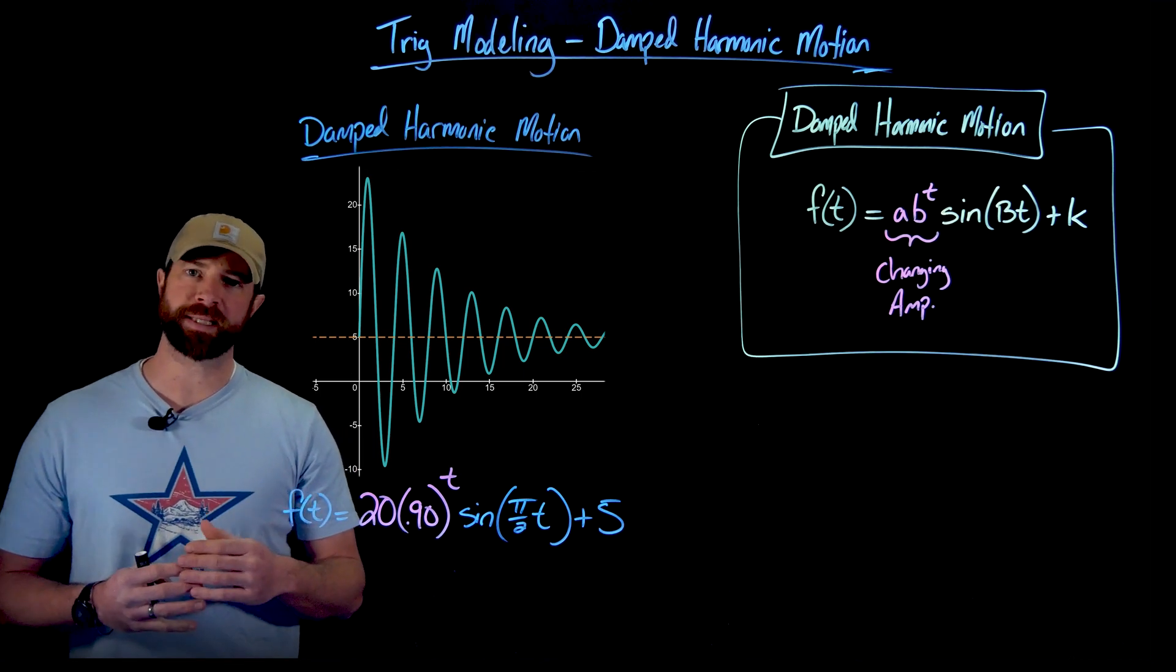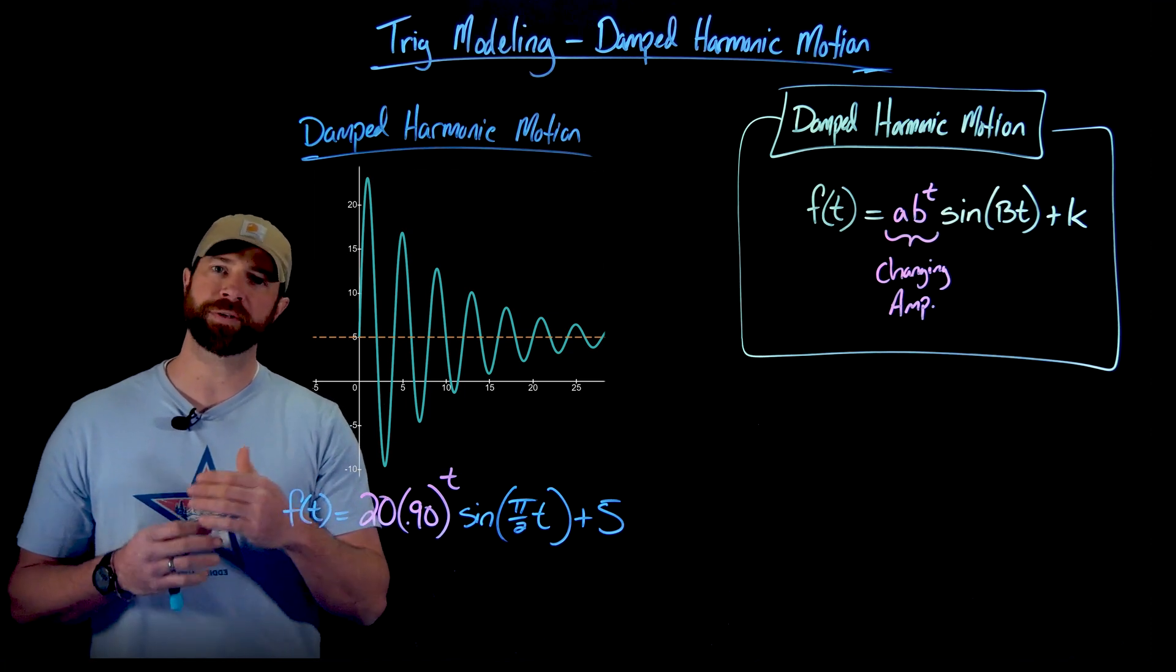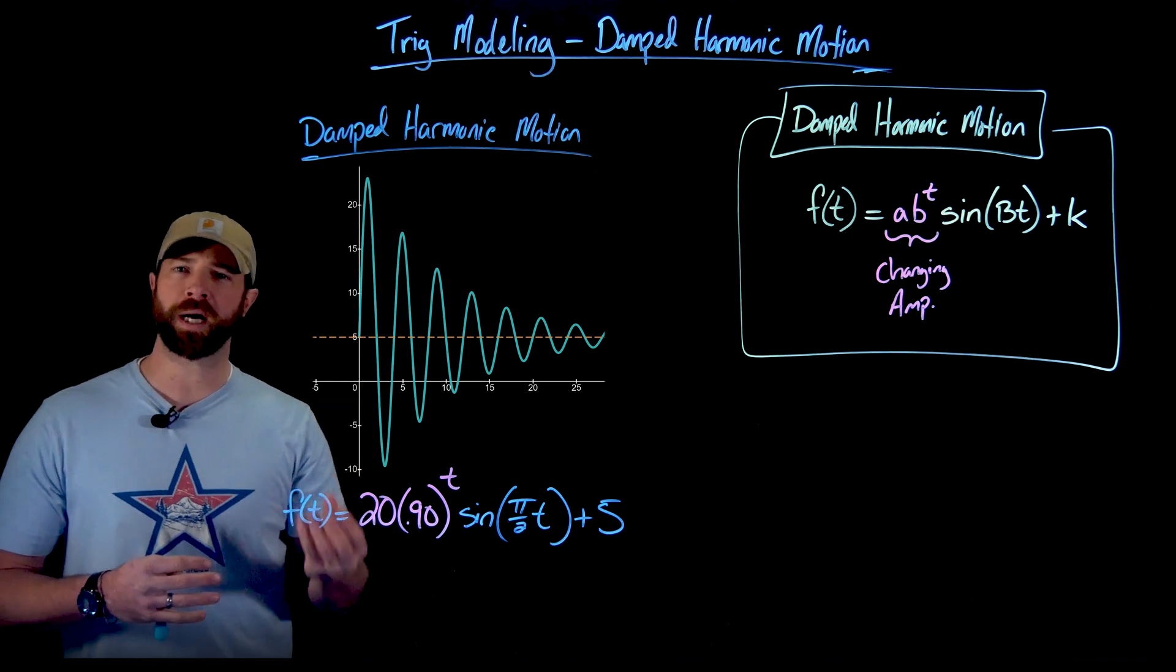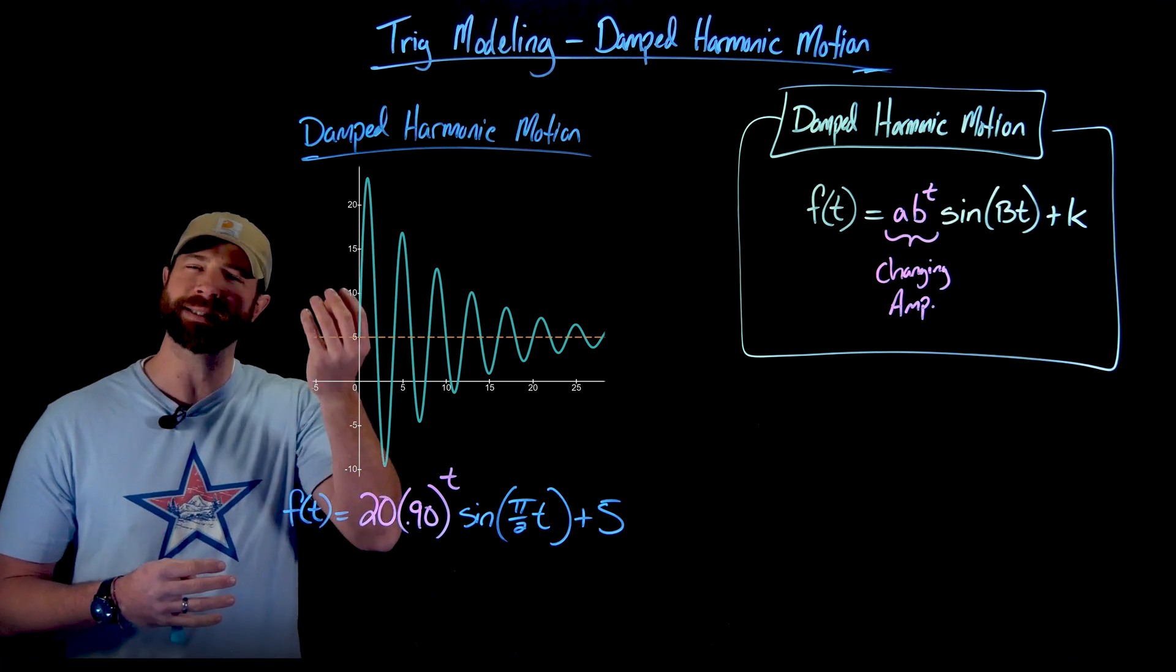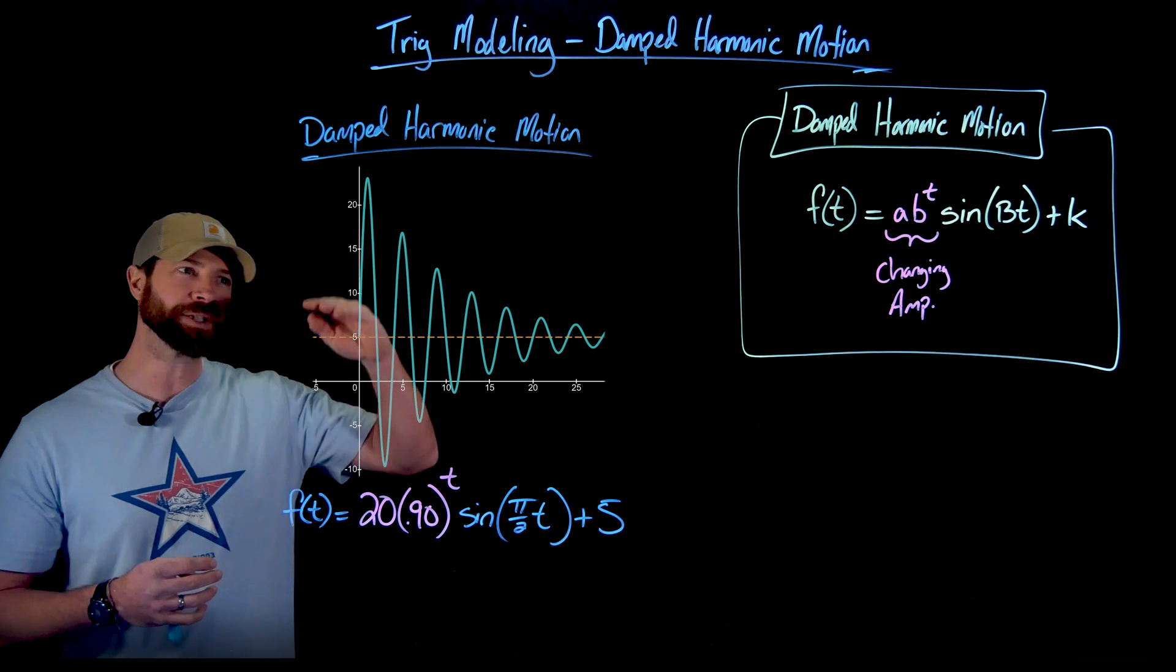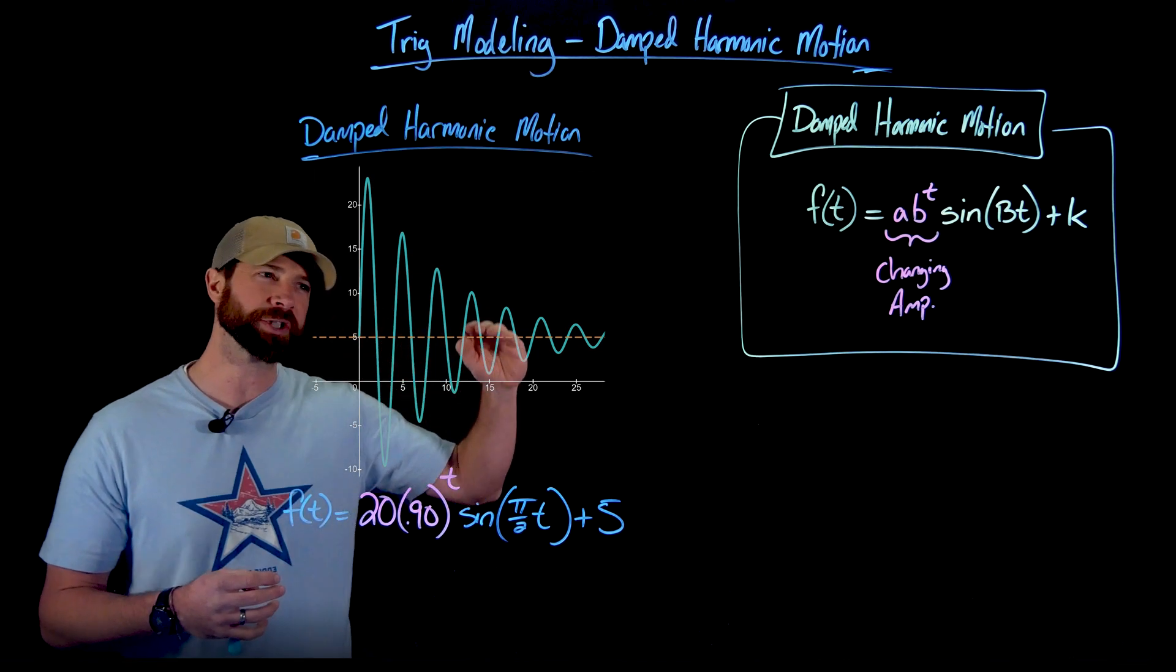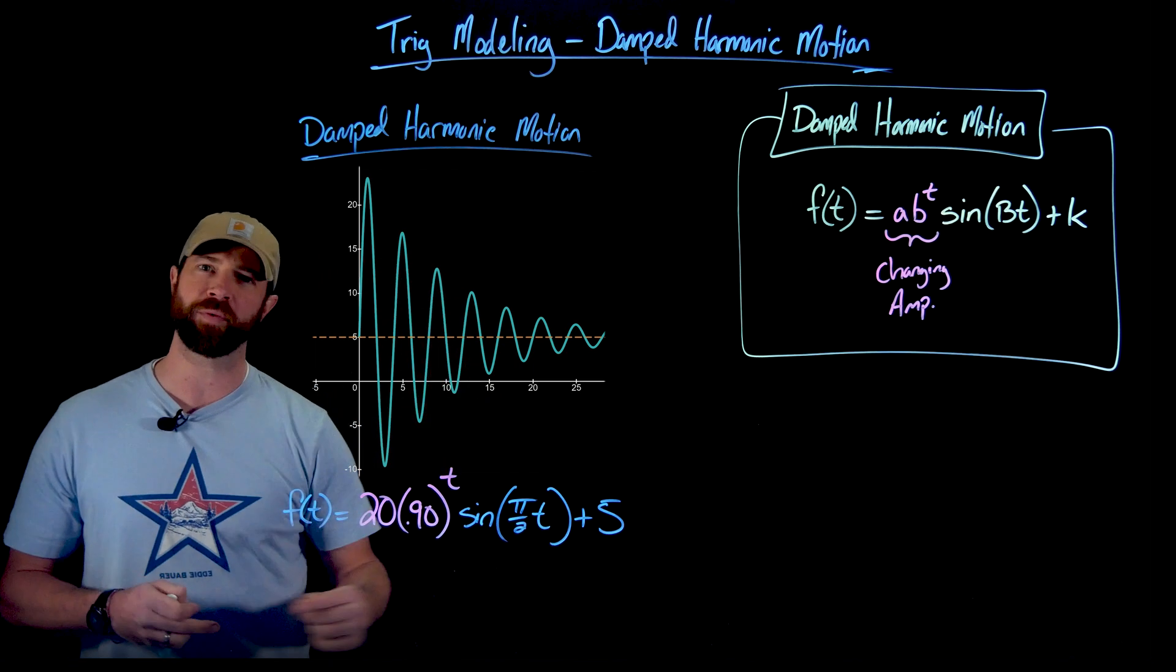And as you'll see in the next example, the reason these kind of functions do well in modeling springs is because if you ever pulled a spring and let it loose, you know that it oscillates back and forth but as time goes on it reaches some equilibrium point and stops moving back and forth. And if you look at this sine curve, it's still oscillating but over time the oscillations become smaller and smaller as they become tighter around the midline of y equals five.